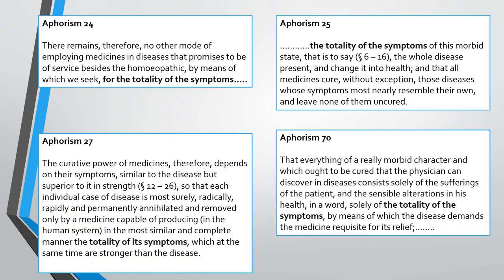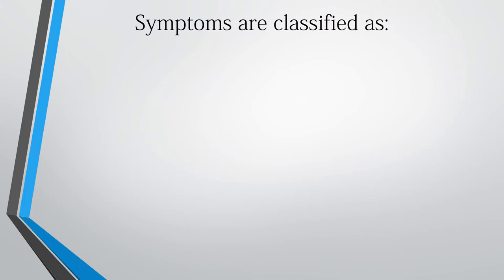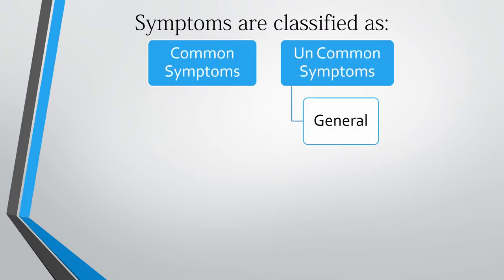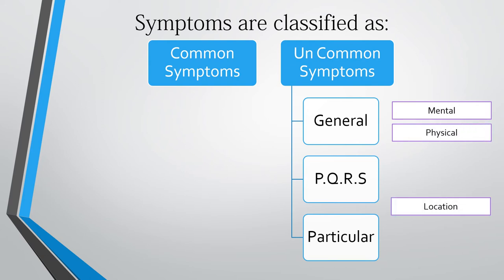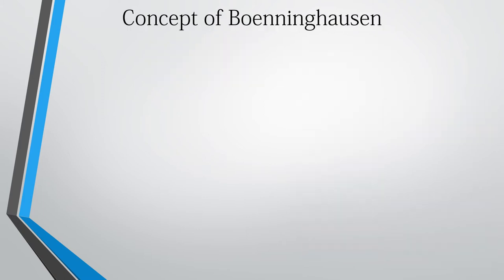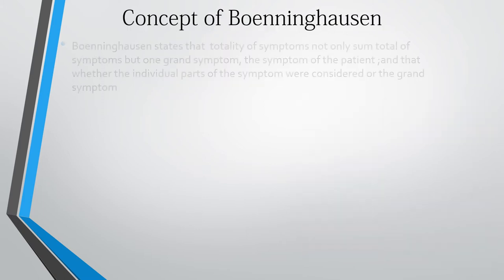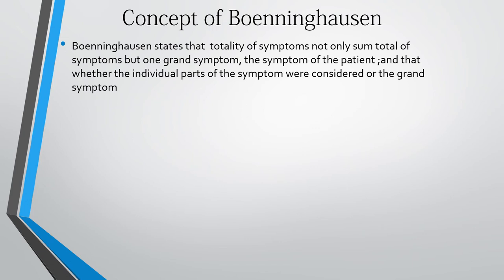Symptoms are classified as common and uncommon. Uncommon symptoms include general PQRS and particular PQRS — where PQRS means Peculiar, Qualified, Rare, and Strange symptoms. General symptoms cover mental and physical aspects, while particular symptoms contain location, sensation, and modalities.